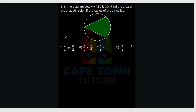The next question: in the diagram below, angle ABC is 30 degrees — find the area of the shaded region if the radius of the circle is one. So this is A, this is B, and this is C. Angle A is 30 degrees and we are looking for the area of this shaded region.